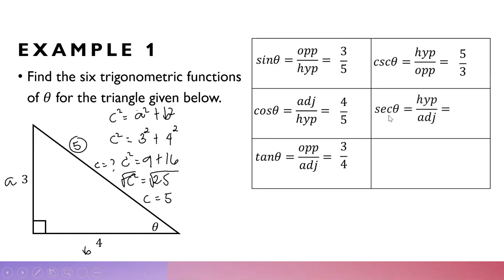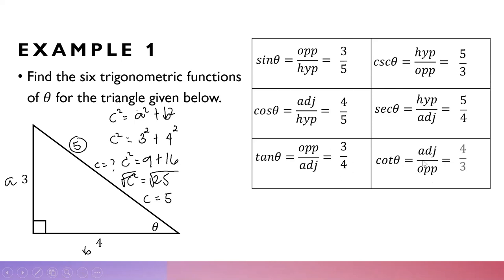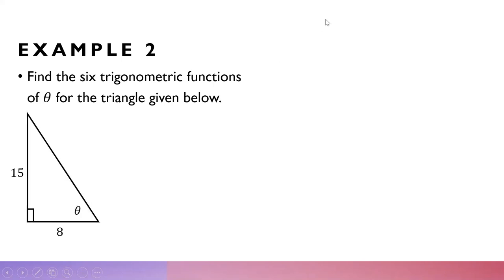The secant of theta is hypotenuse over adjacent — just the reciprocal of cosine — so secant theta equals 5 over 4. The cotangent is adjacent over opposite, which is 4 over 3.